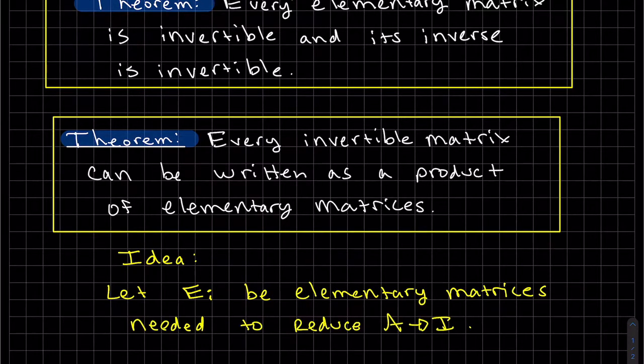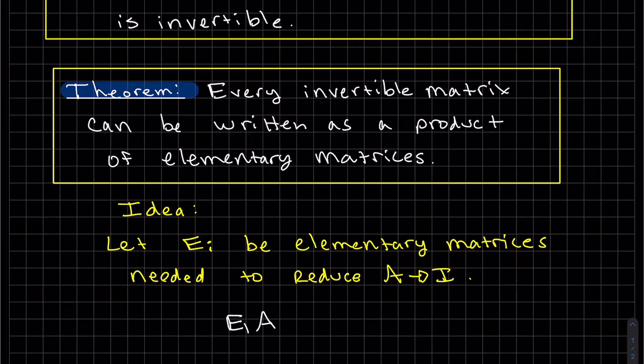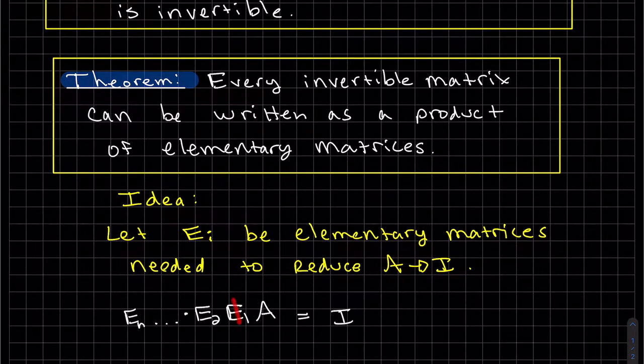So let E_i, where i is 1 to however many, be the elementary matrices needed to reduce A to the identity matrix. So E_1, we multiply E_1 to A, E_2 to E_N, and then you get I.